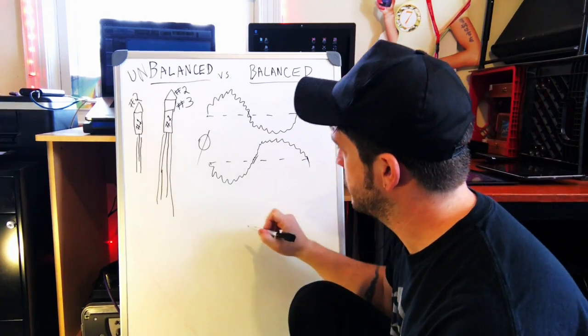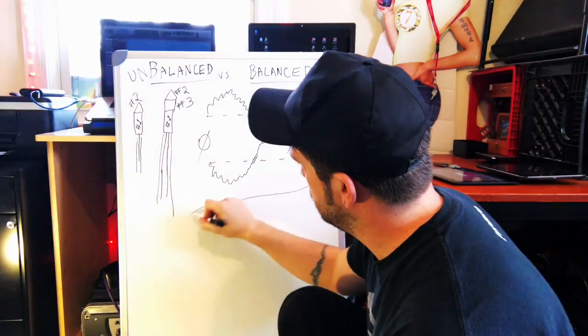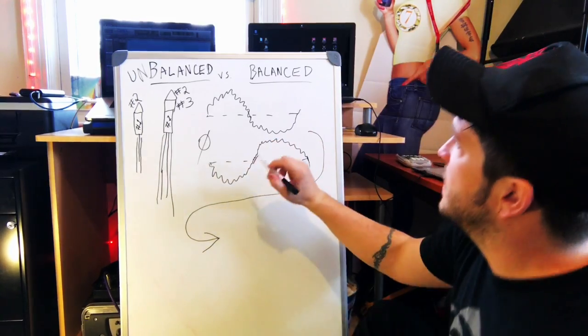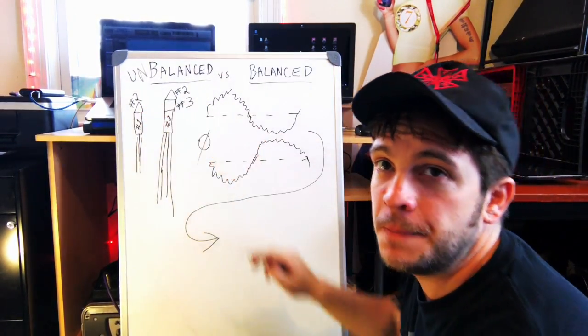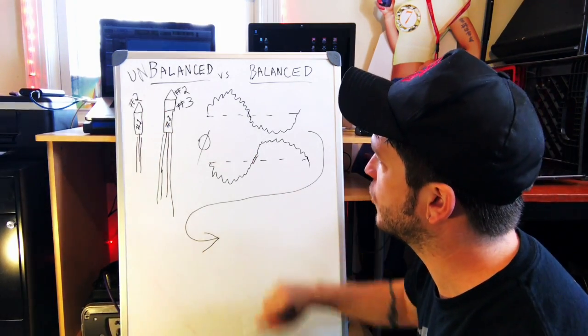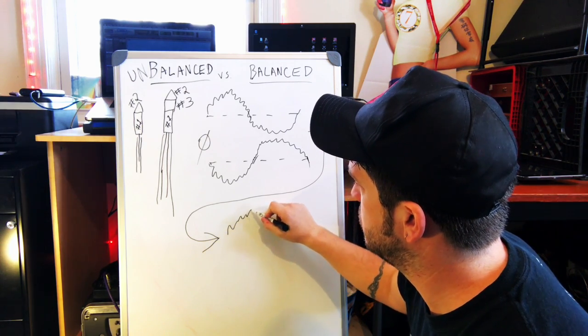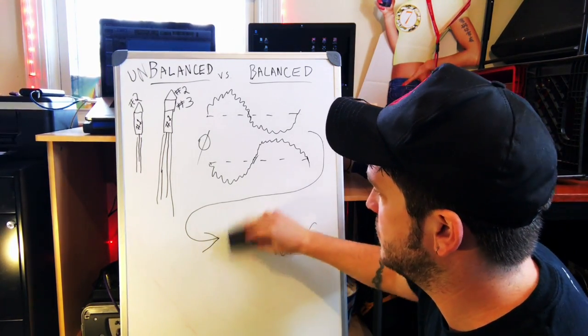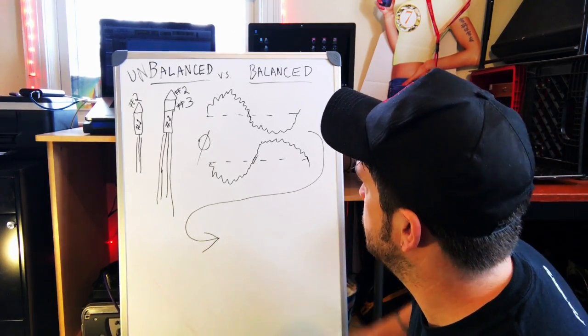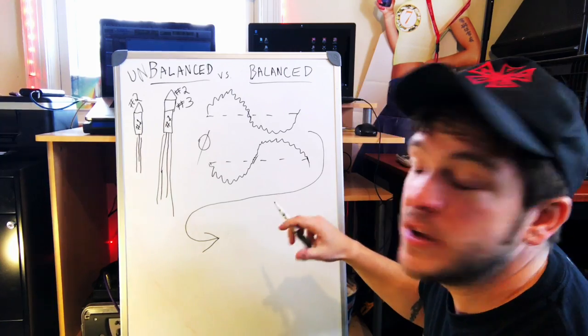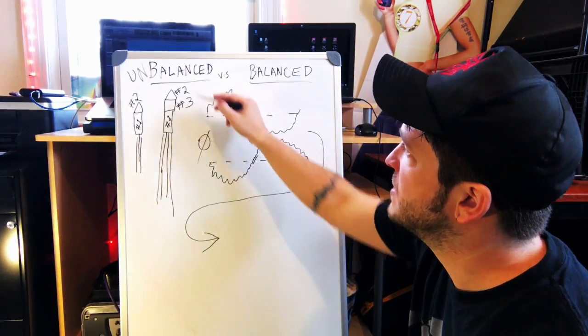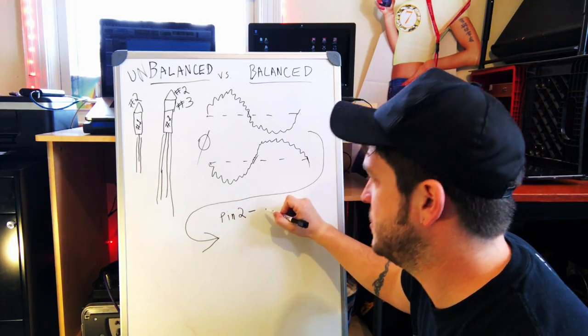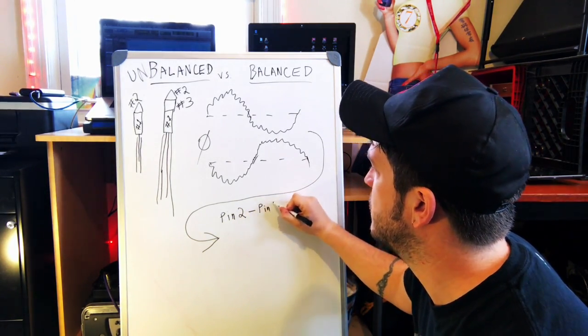Now, this is where the magic happens. Here, say this is our mixer input. On an unbalanced line, it would just read pin two. It reads the voltage on pin two, that's our audio line. So, it comes in with the noise and the signal all together like that, noisy signal, talking about the unbalanced. The balanced, though, with this, it reads the difference between pins two and three. It reads pin two minus pin three.